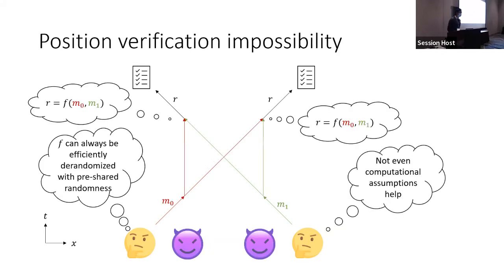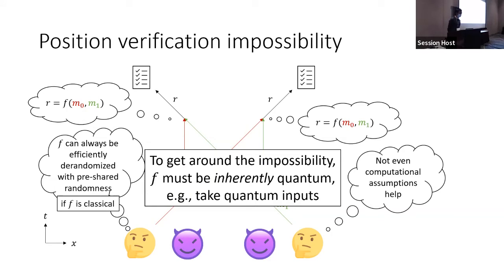This protocol can be proven secure. The classical impossibility does not apply because the attack implicitly assumed the left adversary could clone whatever message was sent — but this fails if the message is quantum. The impossibility only holds when f is at least a classical functionality. This suggests that f must be inherently quantum. In our case, since the goal is classical position verification, f must be a classical function, but perhaps one that can only be computed by a quantum computer.